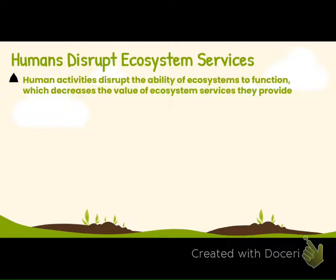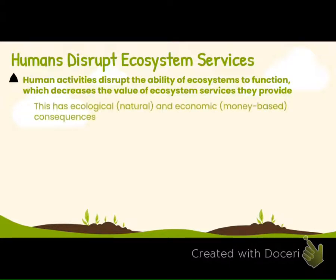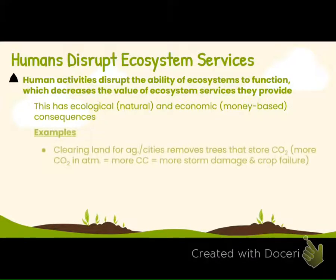Humans disrupt ecosystem services, which decreases their value. For example, this can have both an economic and ecological impact — if we damage the ecosystem and destroy all the trees, that's obviously going to have a natural consequence, but it's also going to cause problems with our ability to collect wood or paper.